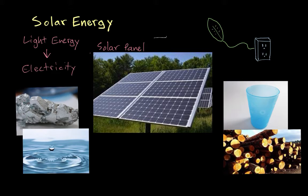Electricity, you might already know, is what we use to turn on light bulbs, power our refrigerators, or watch videos on the internet. What it is is the flow of these little particles called electrons through a wire and then through the light bulb or whatever it is you're trying to turn on.